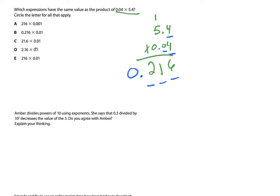Now I need to come over and circle every problem that equals 2,160. Let's look at option A: 216 times 1,000. One times itself is 216, and then I look three places to the right of the decimal — that gives me 216 thousandths, so that's correct. Now look at this one — I already have 216 thousandths, but they're saying if I multiply it by another 100 it stays the same. No, that's going to get smaller, so I can cross that answer out right away.